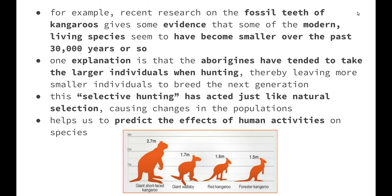This selective hunting has acted just like natural selection, causing changes in these populations. Natural selection means that there has to be variation in the population, and the environment will choose which of those variations is more suited to it — the others die off and the favorable characteristic goes on to reproduce. So this selective hunting has acted as that selecting factor, and organisms outside the trait the aboriginals were hunting for were able to survive and reproduce, helping us predict the effects of human activities on species.